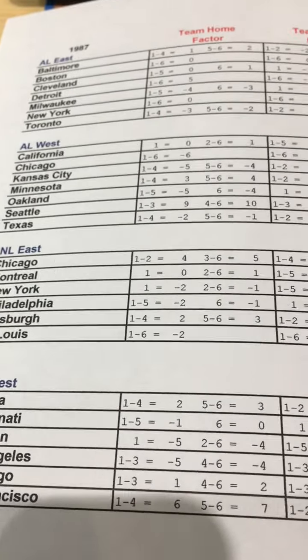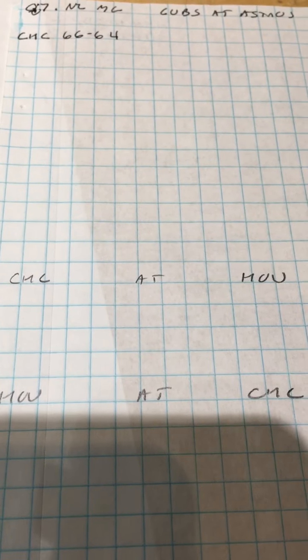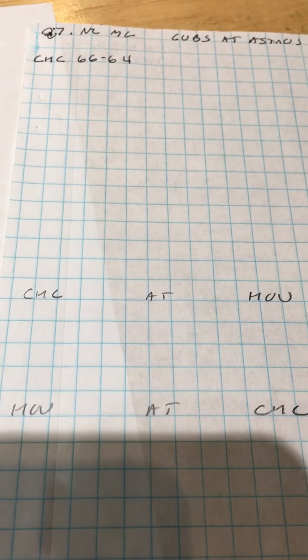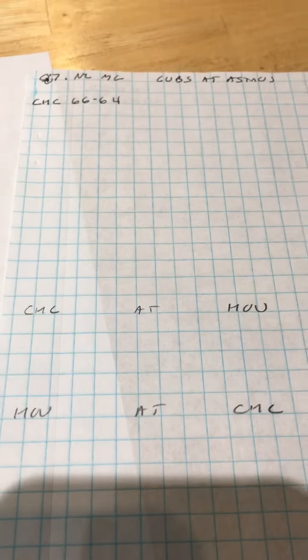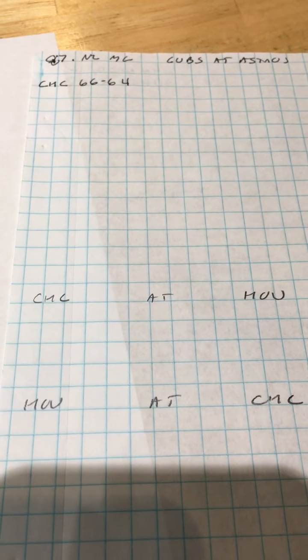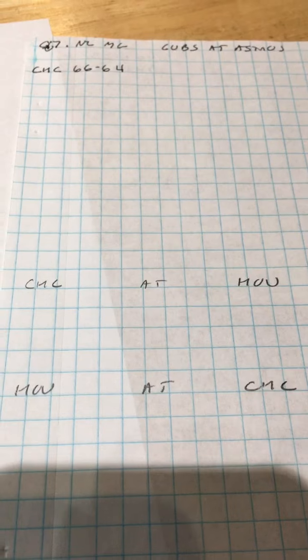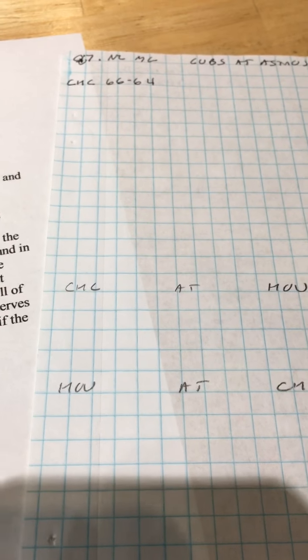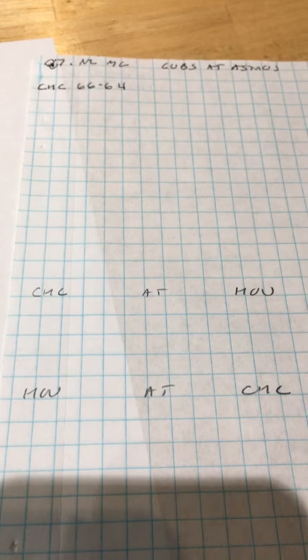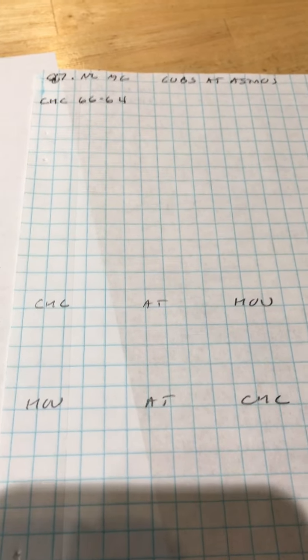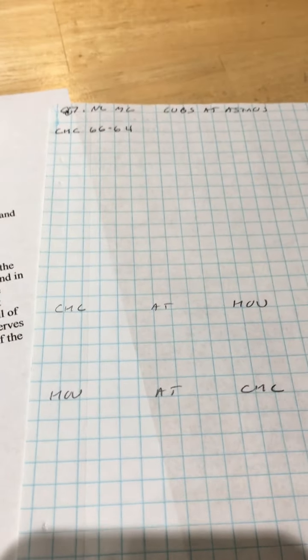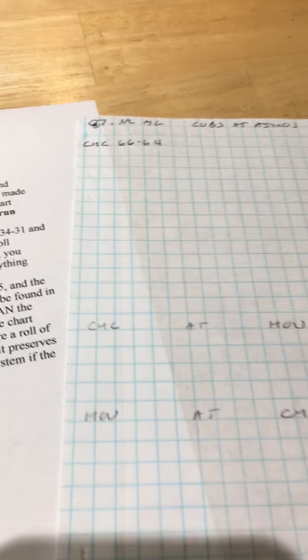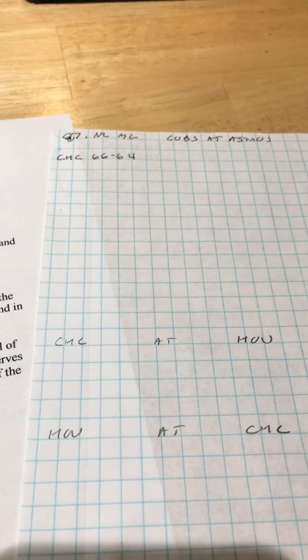My next game in my '87 project is the Cubs at the Astros. Since it's 1987, it's the Astrodome, and it's going to be very hard to hit home runs — APA is going to reflect that. I'll also show another example of Houston at Chicago. Wrigley Field for this particular year is a positive park, so you're going to get more home runs on fly outs, which reflects how many balls you see flying out of Wrigley.